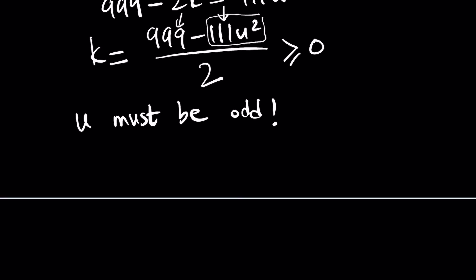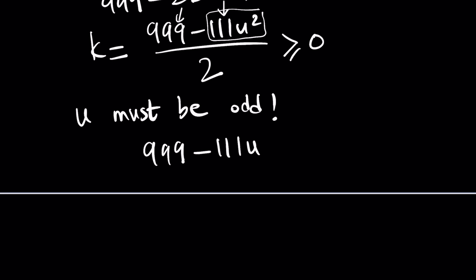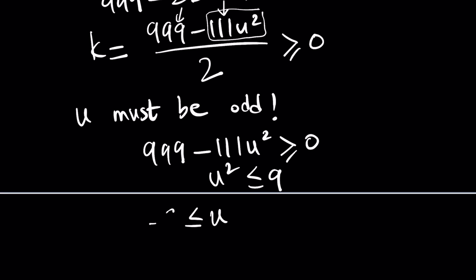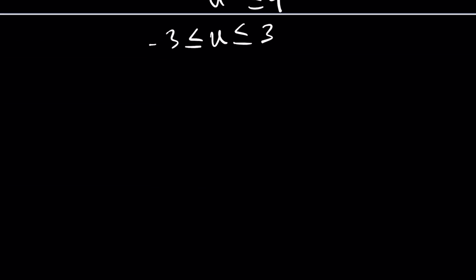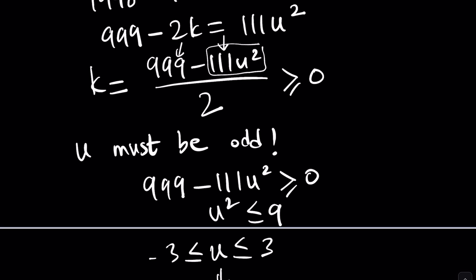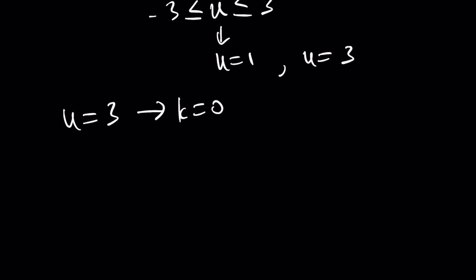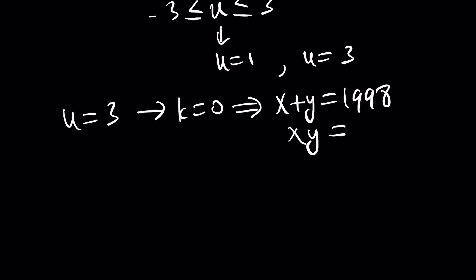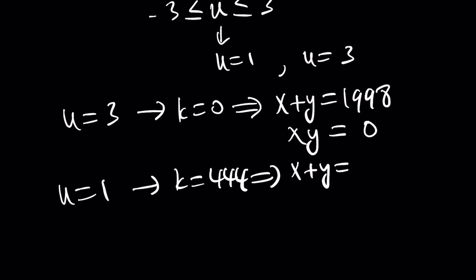Because k is greater than or equal to 0, we need u² to be less than or equal to 9, which means u must be between negative 3 and 3, and u must be odd. Focusing on positive values, u can be 1 or 3. If u equals 3, k will be 0. If u equals 1, then k is 444, x plus y is 1110, and xy equals 444 squared.